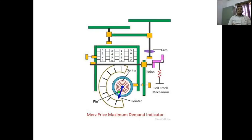In the Merz-Price Maximum Demand Indicator, you are having a cam and a pinion, a spring, a bell crank mechanism, a pointer, and a pin. These are the mechanisms of the Merz-Price Maximum Demand Indicator.